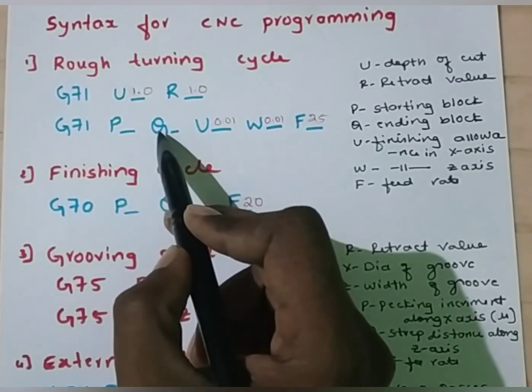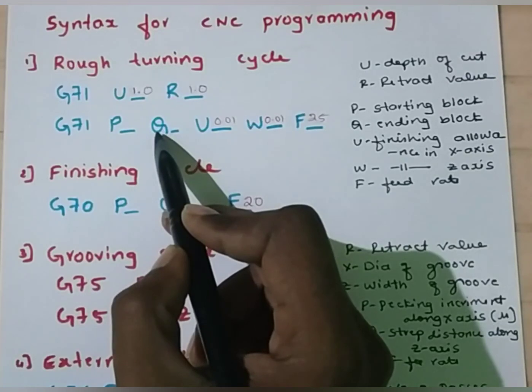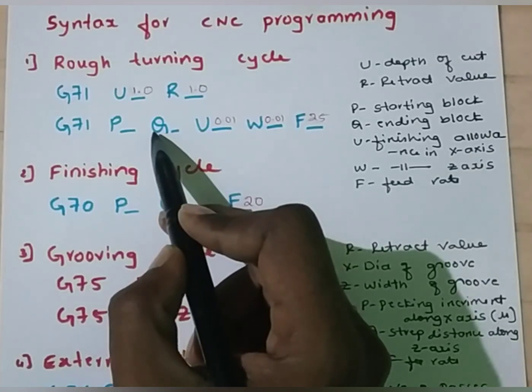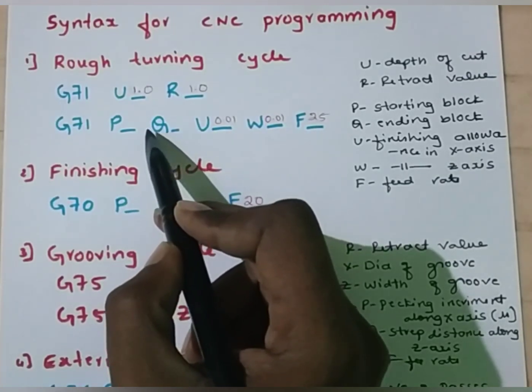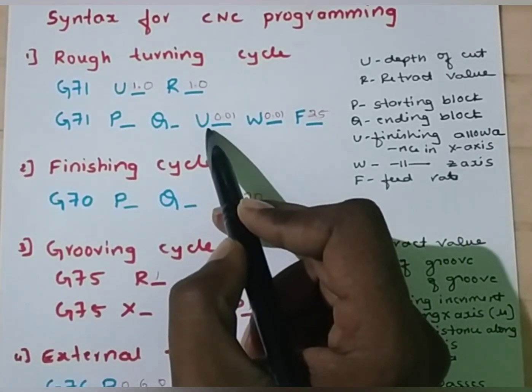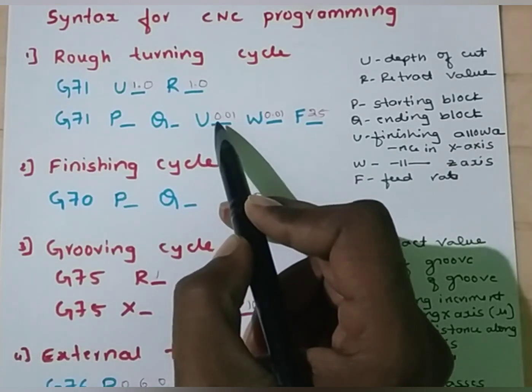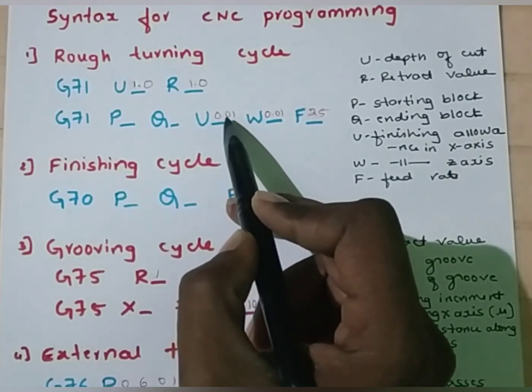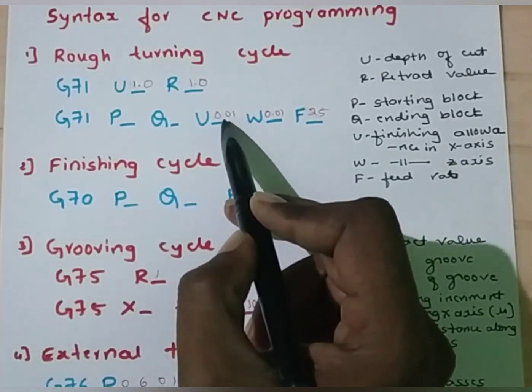P-value and Q-value we can find out by writing the program. U is nothing but finishing allowance in X direction — let it be 0.01 mm.